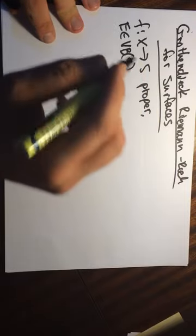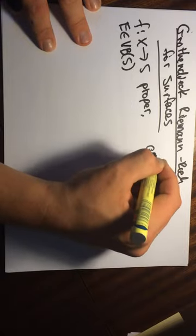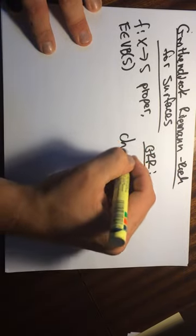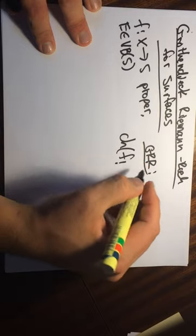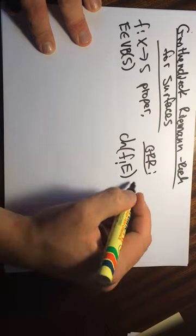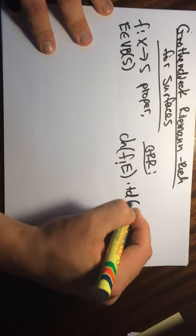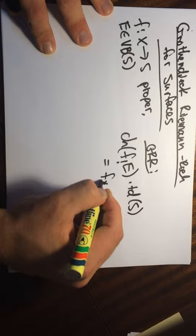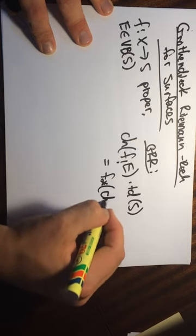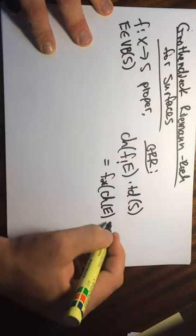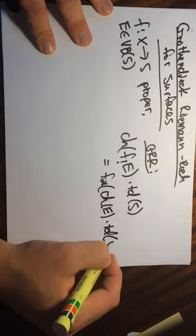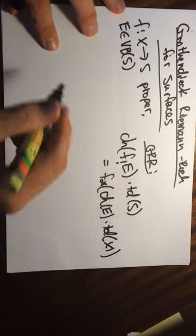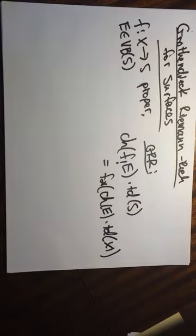And it says that, so the GRR formula, the Grothendieck Riemann-Roch formula, says that the Chern character of this higher push forward times the Todd of S is equal to the direct image of the Chern of E, the push forward plus dotted with the Todd class of X. Okay, so this is the Grothendieck Riemann-Roch formula.